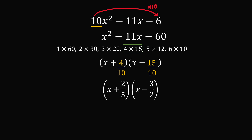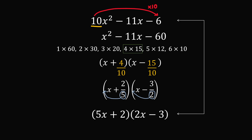So we have x plus 2 over 5 times x minus 3 over 2. Now we slide back the denominators: take the 5 to the front and the 2 to the front. We end up with the factorization of 5x plus 2 times 2x minus 3. And that's how you factor the original quadratic.